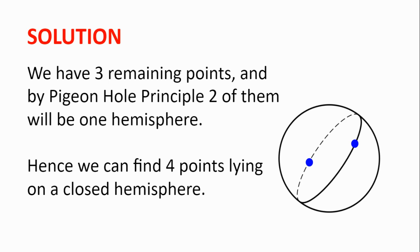We now have three remaining points and two hemispheres. So by pigeonhole principle, one of the spheres will have at least two of the remaining points. Now these two points and the two points lying on the great circle, or the base of the hemisphere, gives us four points lying on one closed hemisphere.